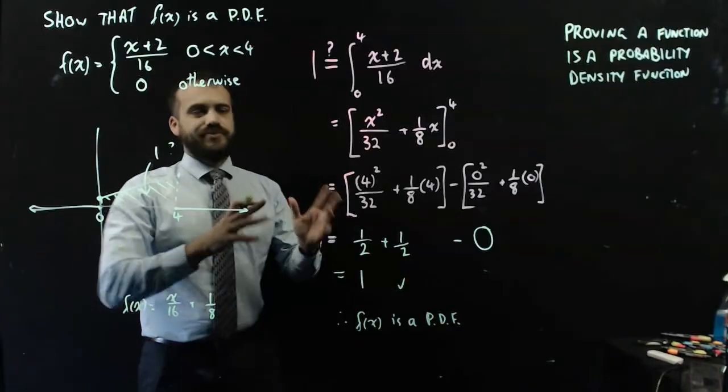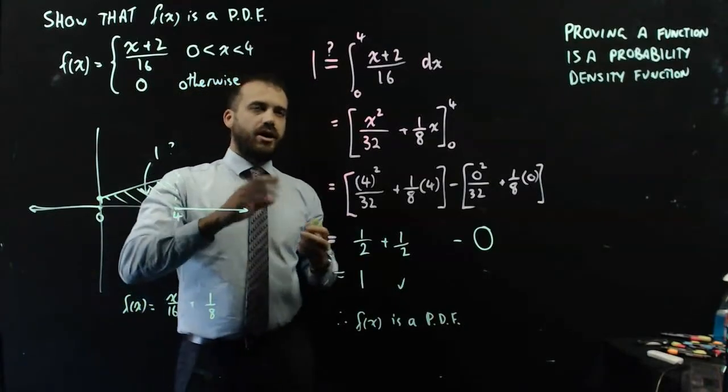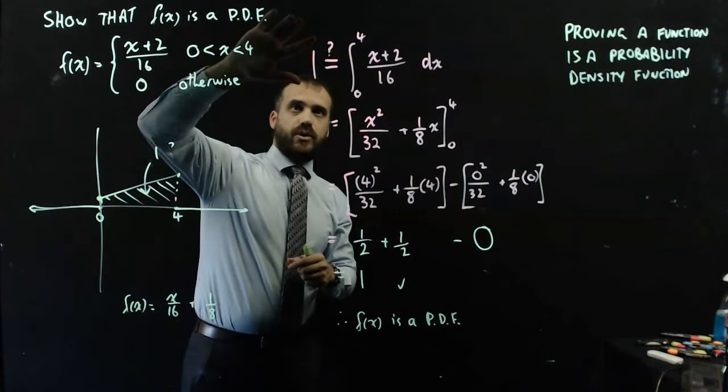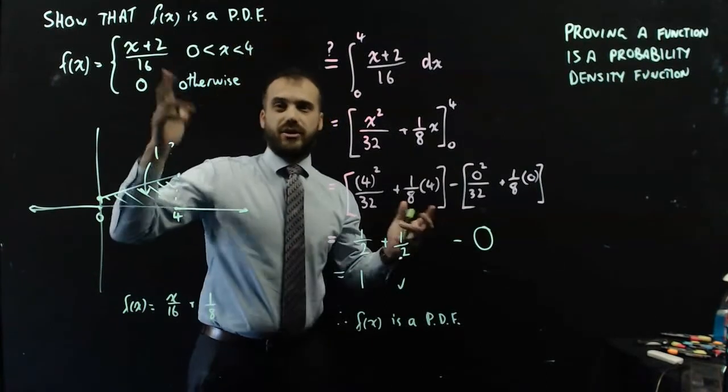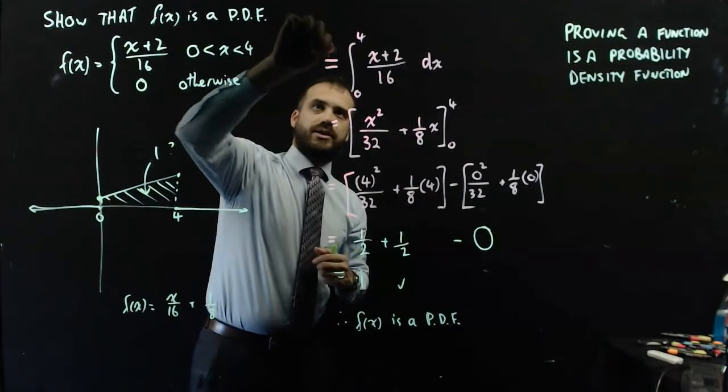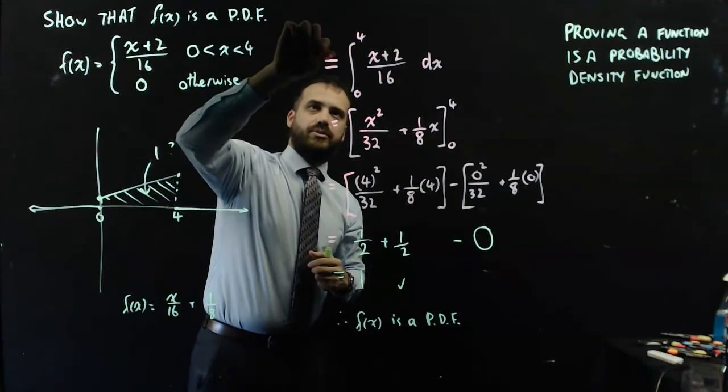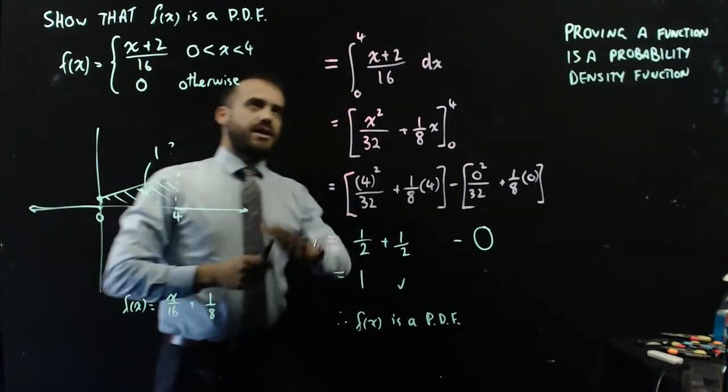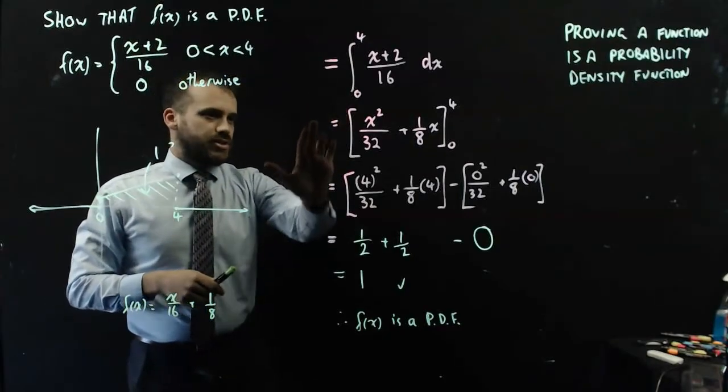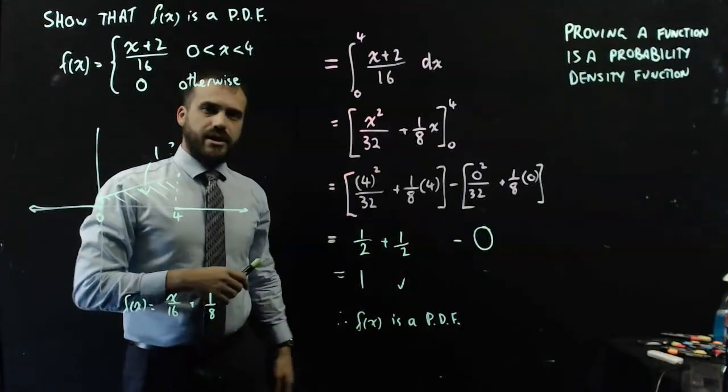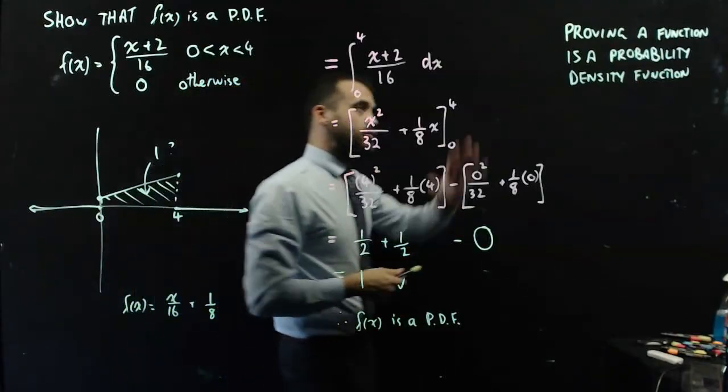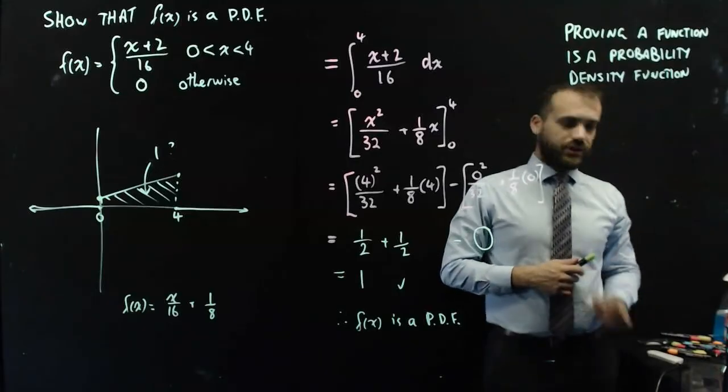Now, I'm not entirely happy with what I've done up here. I really should leave the 1 off entirely to begin with, because I don't know. And like this little question mark notation, I like using it, but it's probably not great. So let's just leave it like this, and say, let's solve it. The answer's 1, great, therefore, it's a PDF. That is how you prove a function is a probability density function.